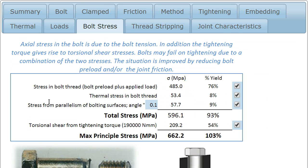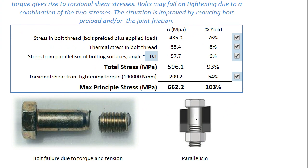We've also got a stress resulting from the parallelism of the bolted surfaces, which is actually quite neatly explained in the sketch below. This is where this surface is not parallel to this surface, so as the bolt's tightened, it's forcing the bolt to bend. That's a very small angle, but it's generating quite a high stress, and it's something that can cause problems with bolts.